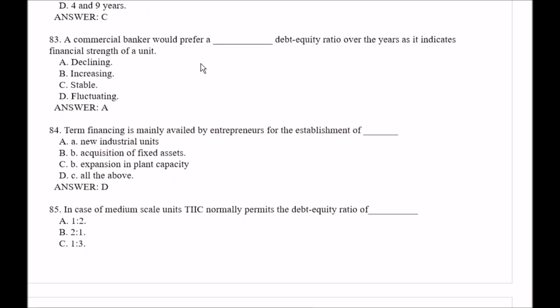Question number 83: A commercial banker would prefer a blank space debt-equity ratio over the years, as it indicates financial strength of a unit. Options: Option A, declining; Option B, increasing; Option C, stable; Option D, fluctuating. The right answer is Option A, declining.